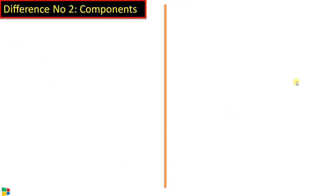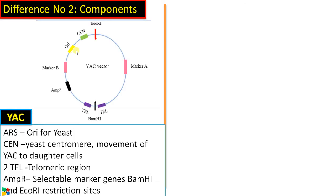Difference number two regarding the components of the vector. In the case of YAC vector, it is having an ORI or origin of replication which is called as ARS, autonomously replicating sequence of the yeast, which is essential for replicating inside yeast cell. Then there is a centromeric region which is needed for movement of YAC to daughter cells. Then there are two telomeric regions.